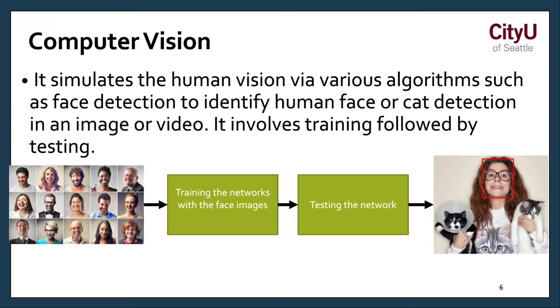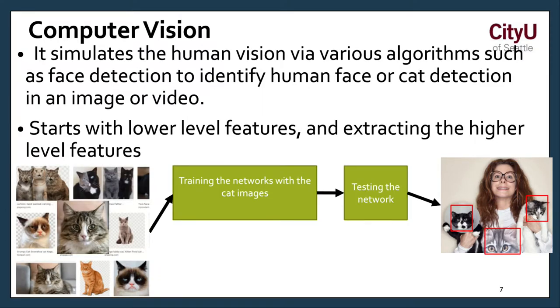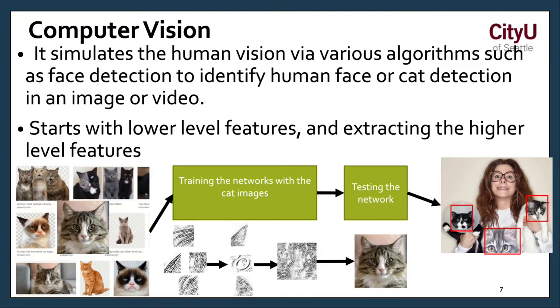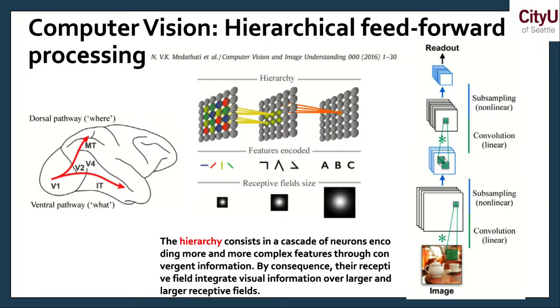You have images. Now you have to train the networks with face images and you also have to do some tests. Put a new image there and see if it would identify. First you would want to start with lower level features and extracting the higher level features. For example, this cat images, and you test and they can identify the face. What are the features that we can use such as the cat's ears, the cat's eye, the shape. After we got those small features, maybe the whole face, maybe a section of the face.